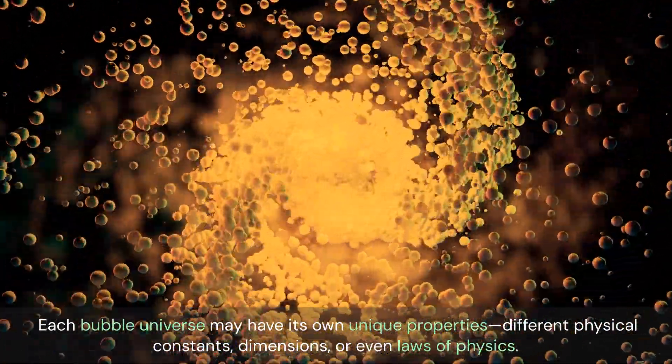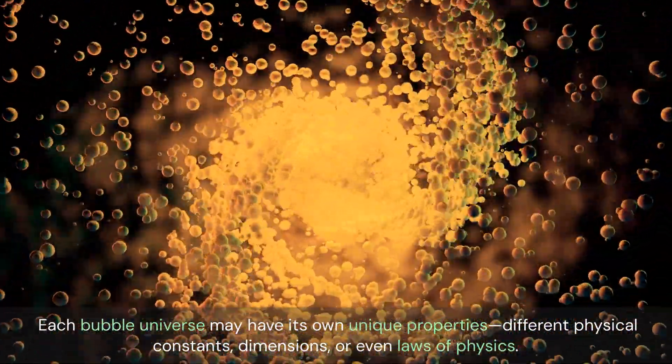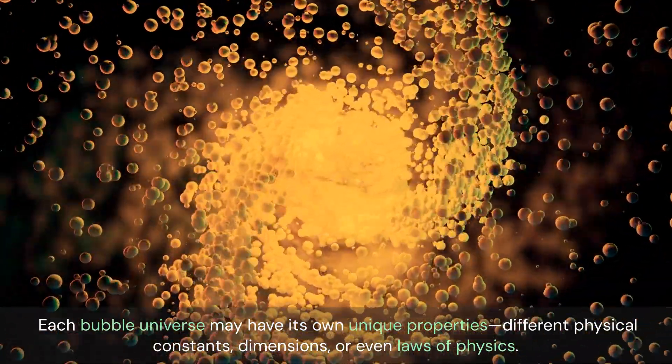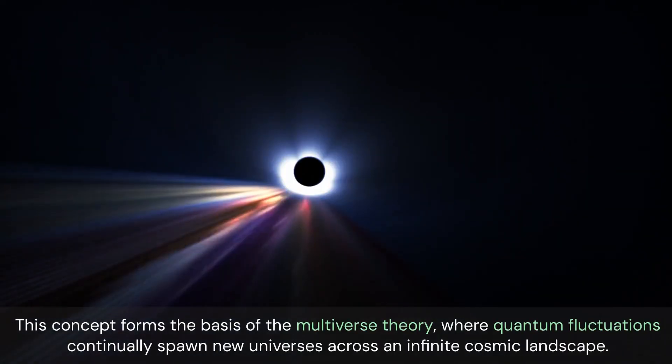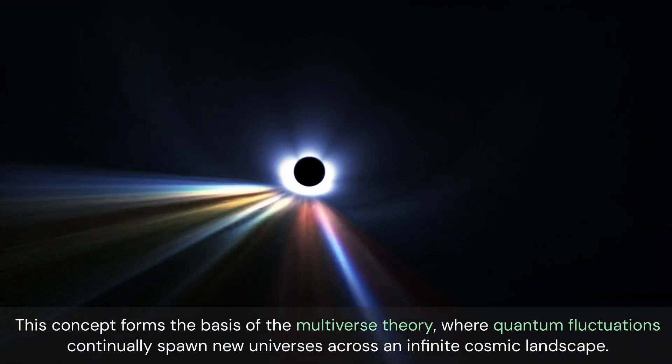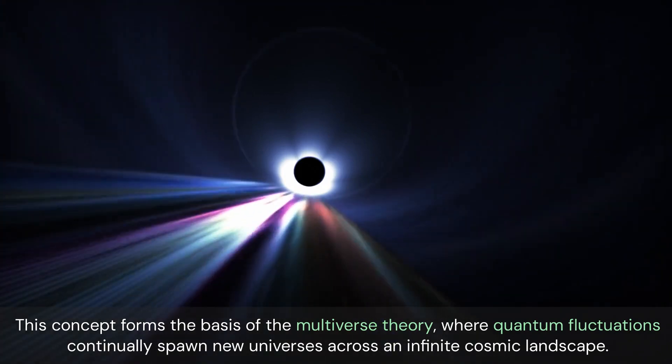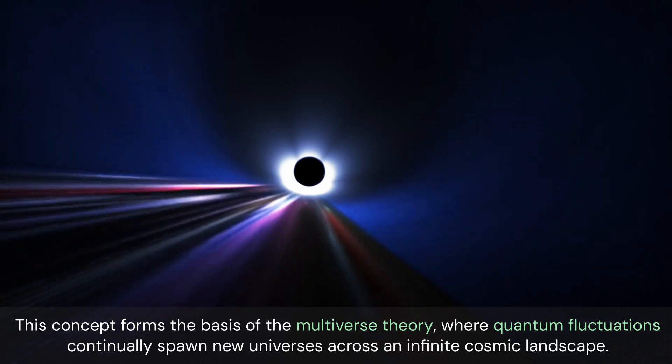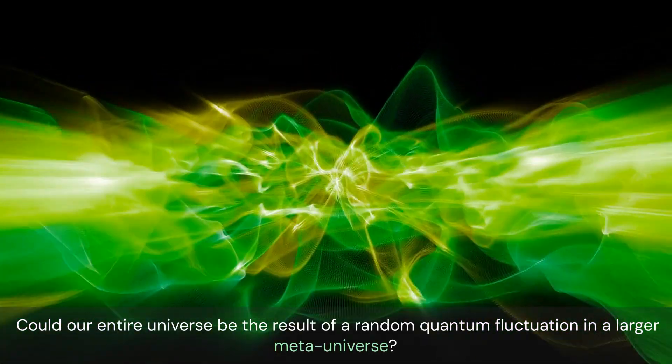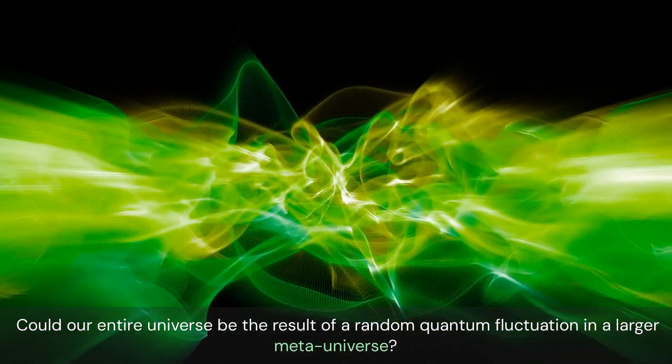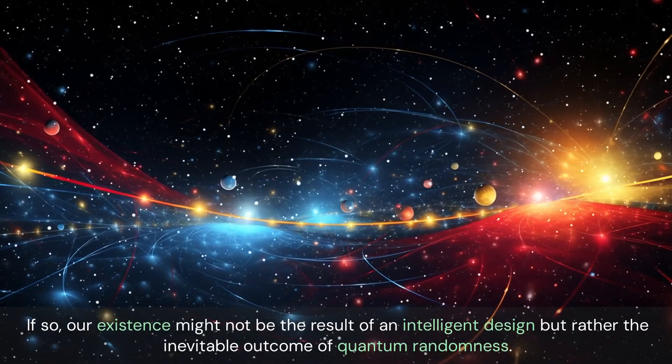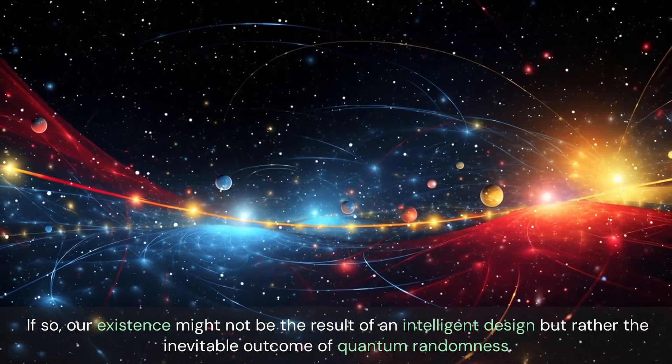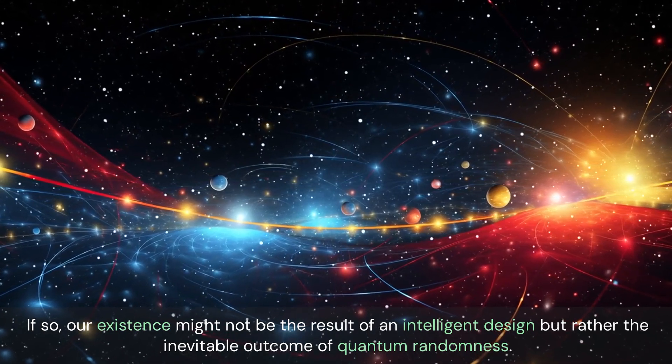Each bubble universe may have its own unique properties, different physical constants, dimensions, or even laws of physics. This concept forms the basis of the multiverse theory, where quantum fluctuations continually spawn new universes across an infinite cosmic landscape. Could our entire universe be the result of a random quantum fluctuation in a larger meta-universe? If so, our existence might not be the result of intelligent design but rather the inevitable outcome of quantum randomness.